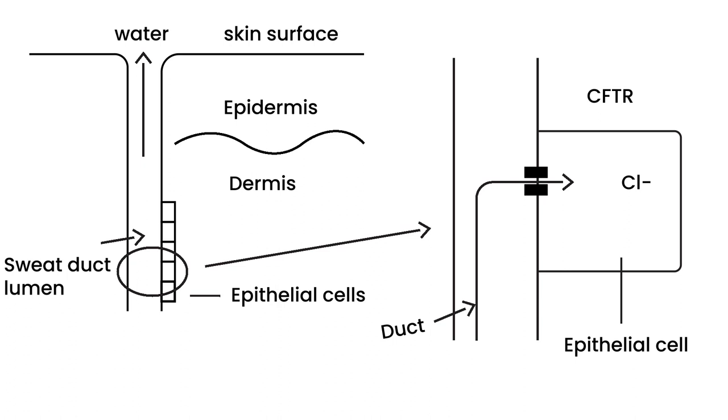Now, there's another channel that exists in the same cell. It's called a sodium channel. The sodium channel, as you can imagine from the name, transports sodium. And sodium goes out into the duct. So sodium comes out, chloride goes back into the cell.